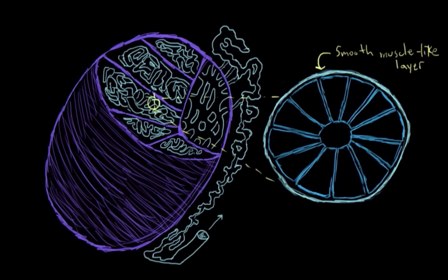After leaving the seminiferous tubules, the sperm drain out into this network of tubes here called the rete testis. Then, after the rete testis, they drain to the epididymis where they hang out to mature and be stored for a while. So, that's just a little bit on peristalsis and the movement of the sperm through the tubes.